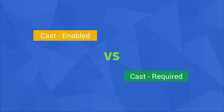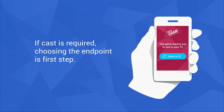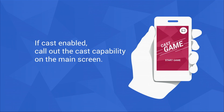Next, you need to decide whether the game is cast-enabled or if the casting behavior is required for gameplay. Each option has slightly different considerations on how players can enter the cast flow and whether they can play the game away from the television. If the game requires a Google Cast endpoint in order to play, make sure to explicitly tell players and their first action should be to connect to the endpoint — this will start a receiver application on an endpoint like a Chromecast. If the game is cast-enabled, meaning it can be played without a Google Cast endpoint, you need to clearly call out the capability to cast the game session on the main screen and provide a clear user experience.